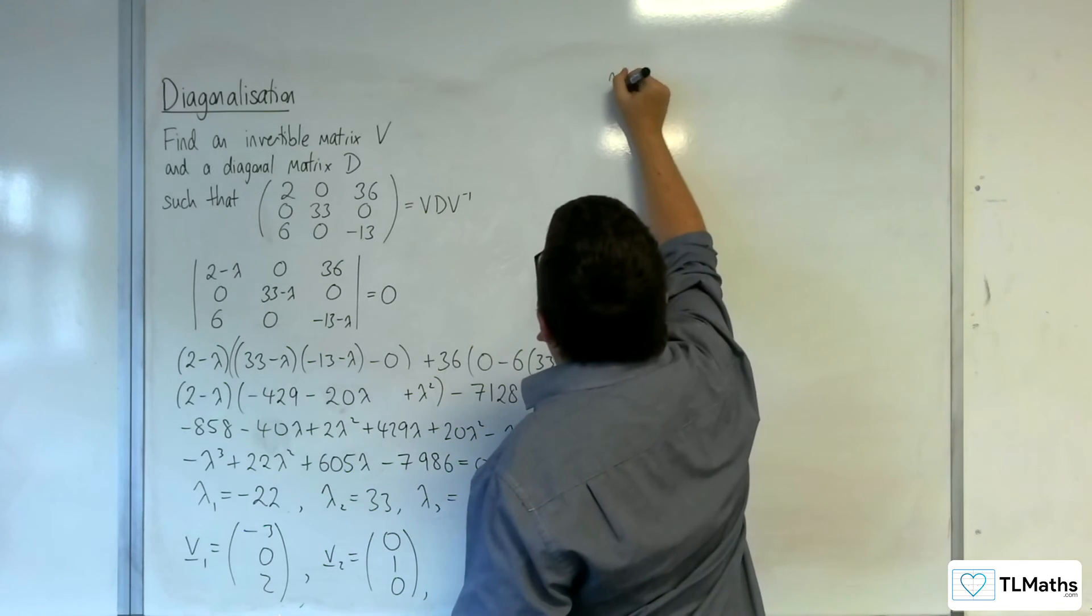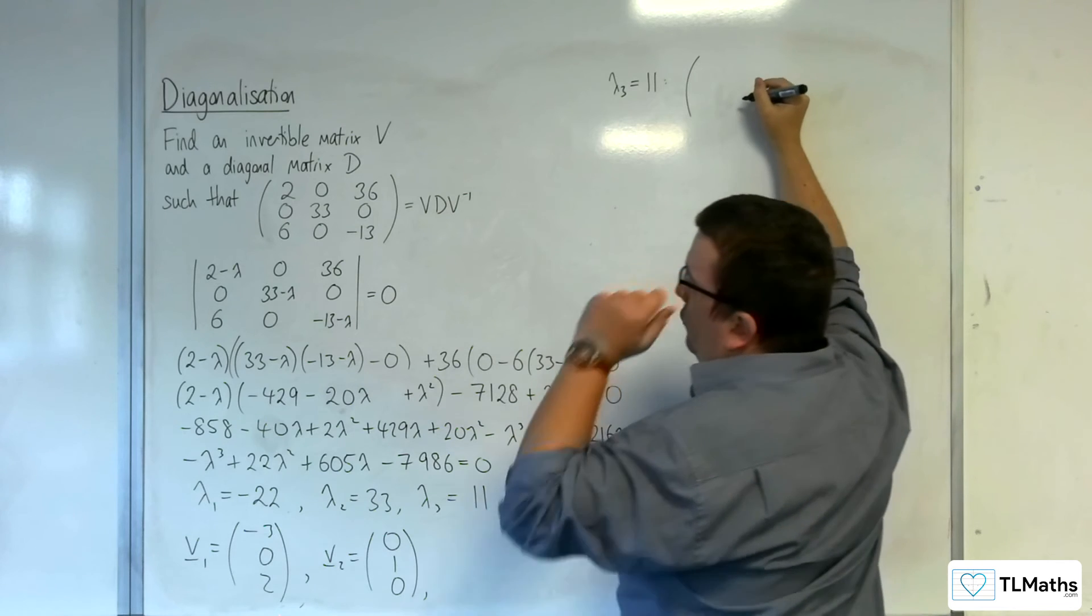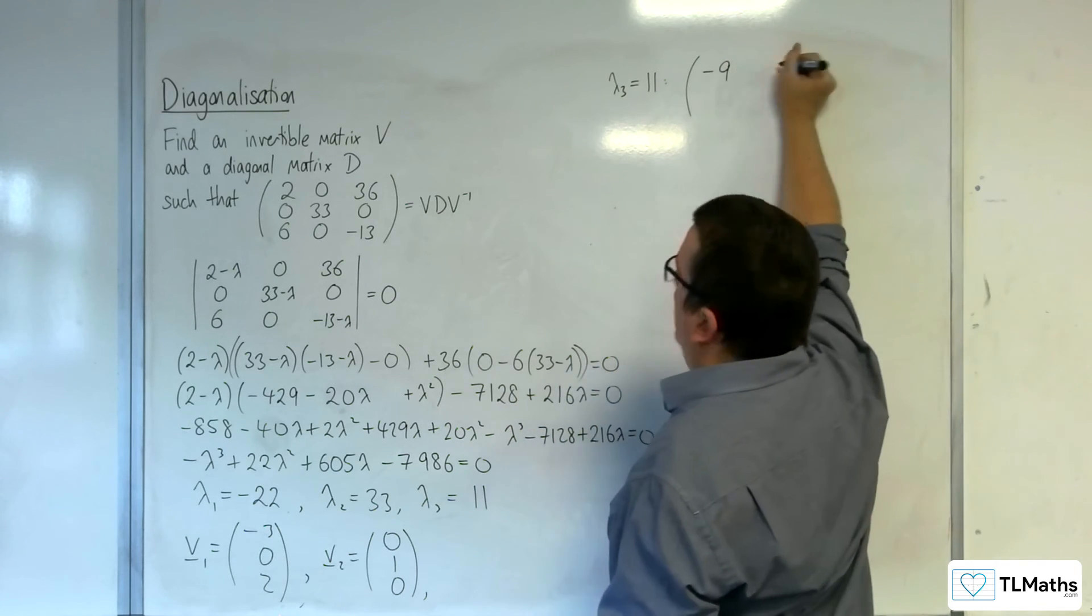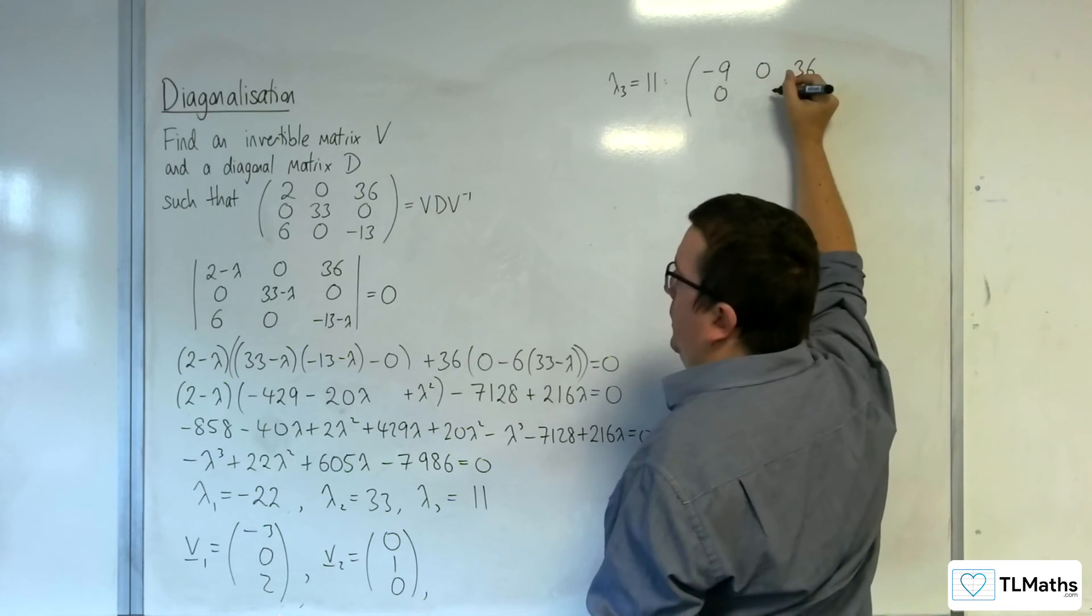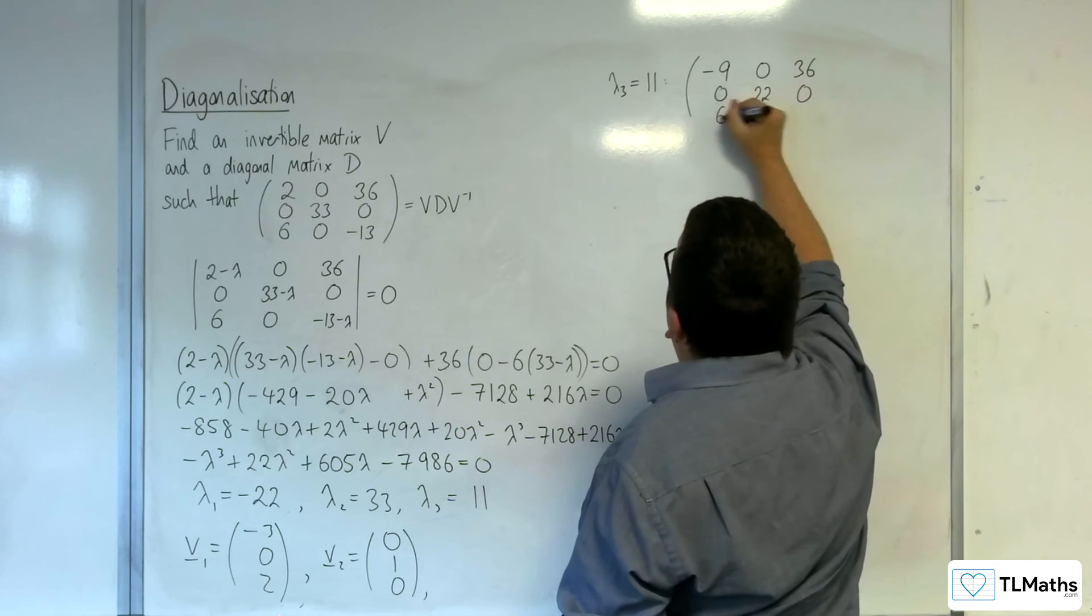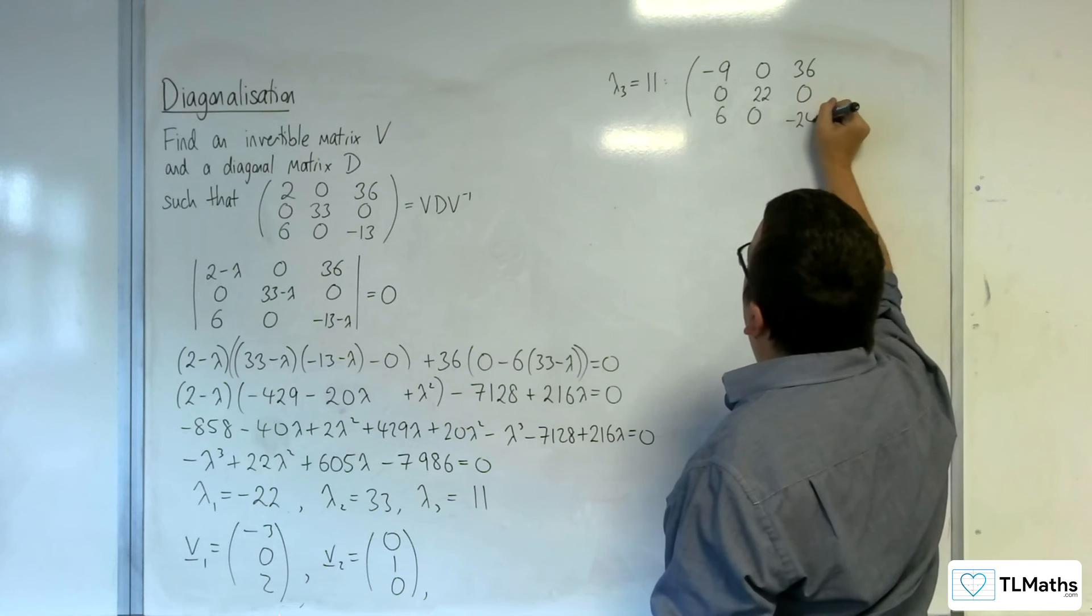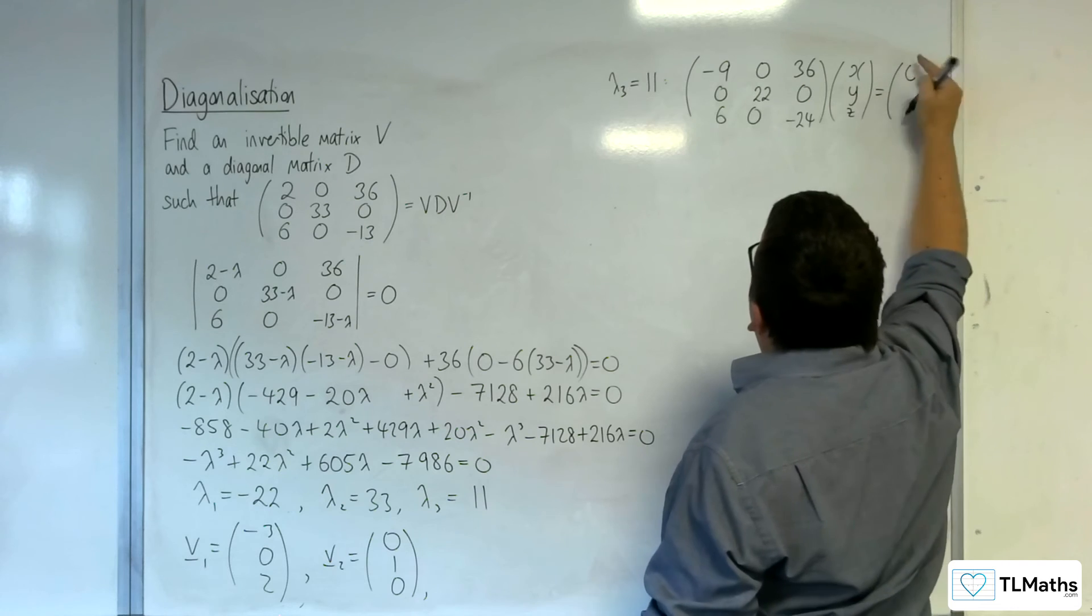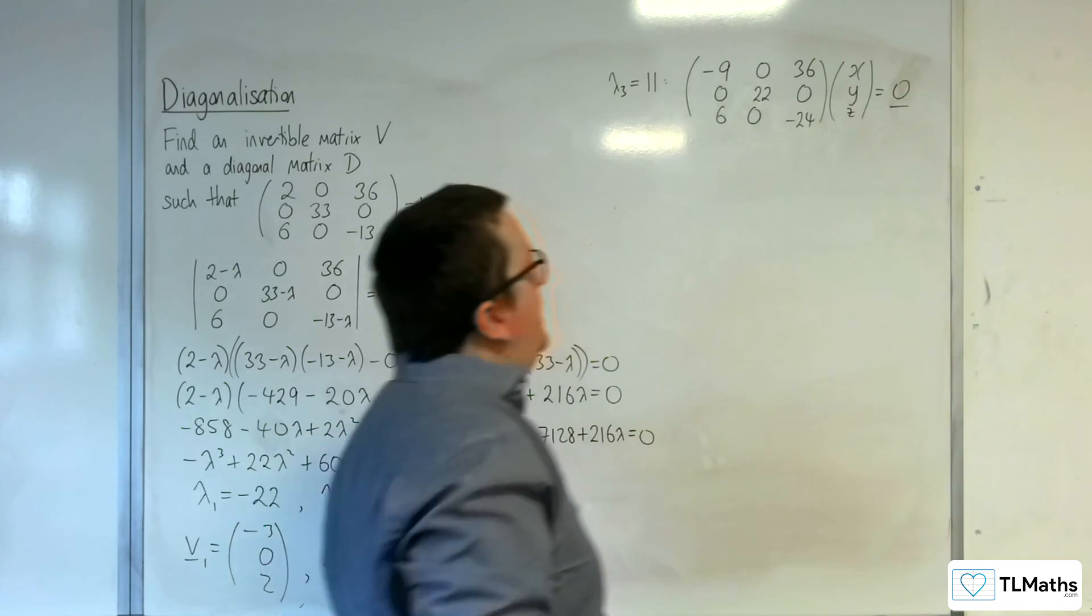Then lambda 3 is equal to 11. So our matrix is 2 take away 11, so minus 9, 0, 36, 0, 33 take away 11, so 22, 0, 6, 0, minus 13 take away 11, so minus 24. So x, y, z is the 0 vector.